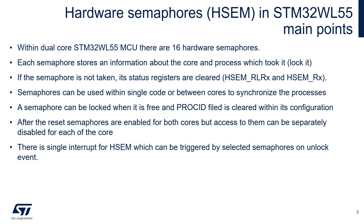We have two main registers for each semaphore: HSEM_RLRx and HSEMRx. Semaphores can be used with a single core or between cores to synchronize actions and processes. A semaphore can be locked when it is free — not taken by any process or core, and its PROCID field is cleared. After reset, semaphores are enabled by default and available for both cores, but access can be separately disabled for each core. There is a single interrupt for hardware semaphores which can be triggered by selected semaphores once a semaphore is unlocked.